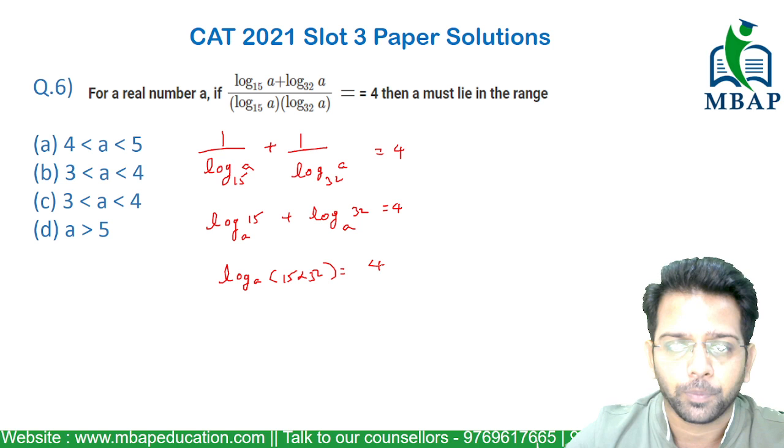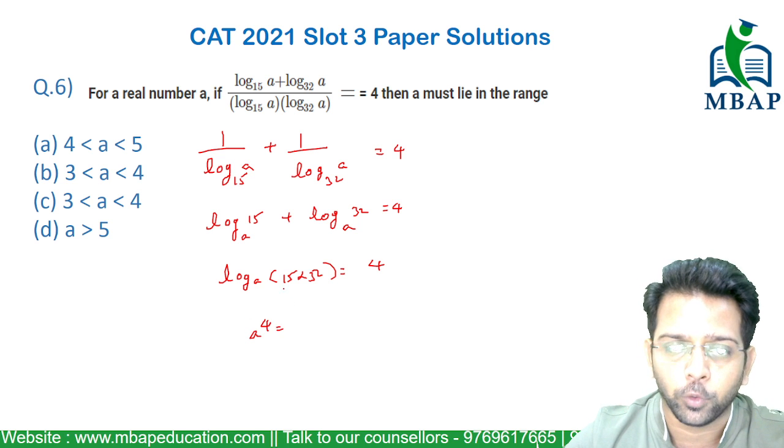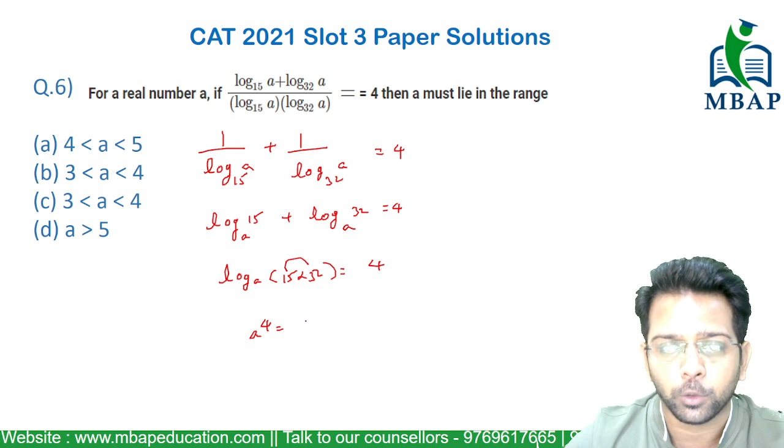This should be equal to 4, or indirectly a raised to power 4 should become 15 into 32, which should be equal to 480.